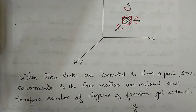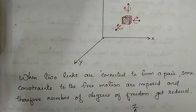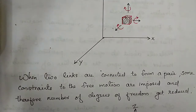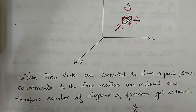When two links are connected to form a pair, some constraints to the free motion are imposed and therefore the number of degrees of freedom gets reduced. If we put some constraints to this motion, then the number of degrees of freedom will get reduced.